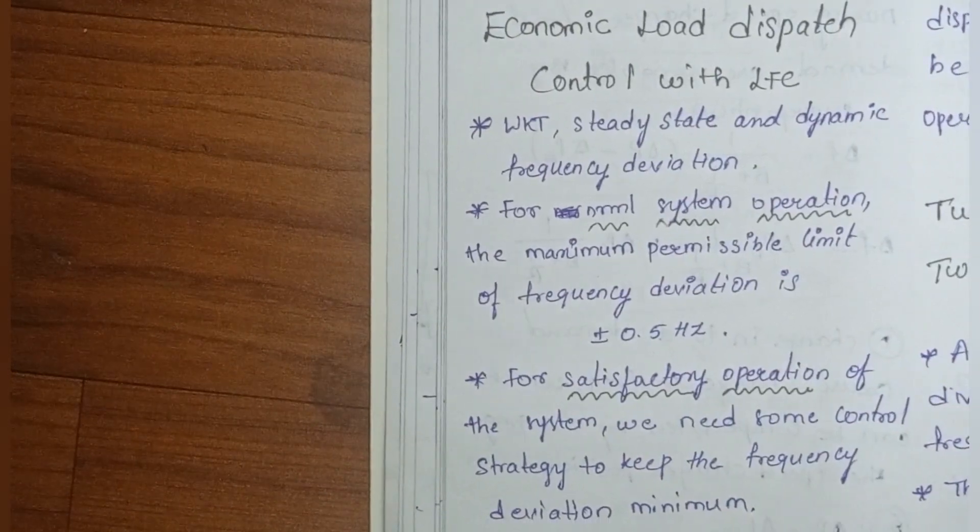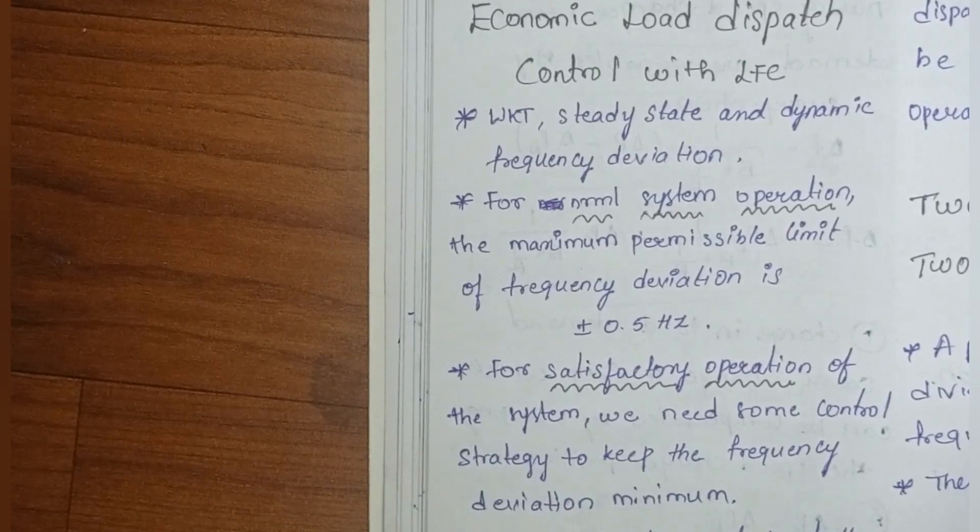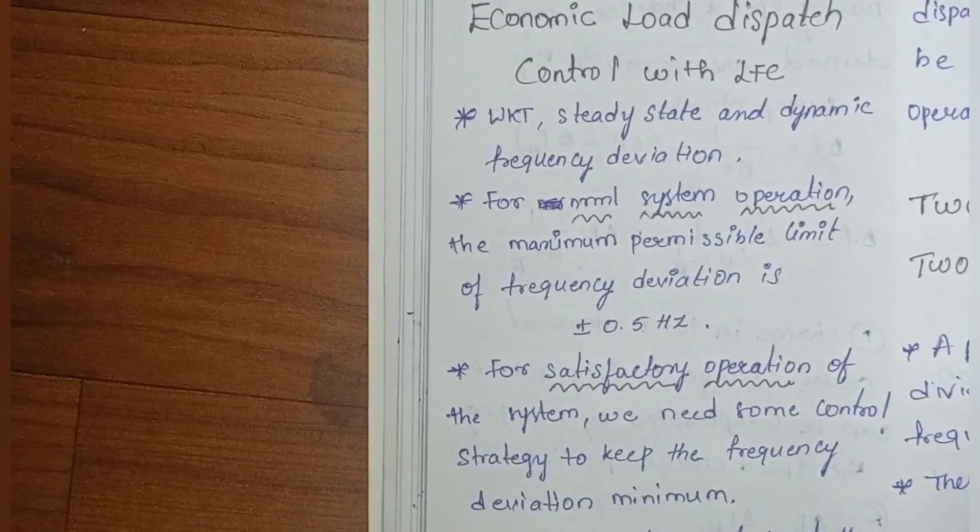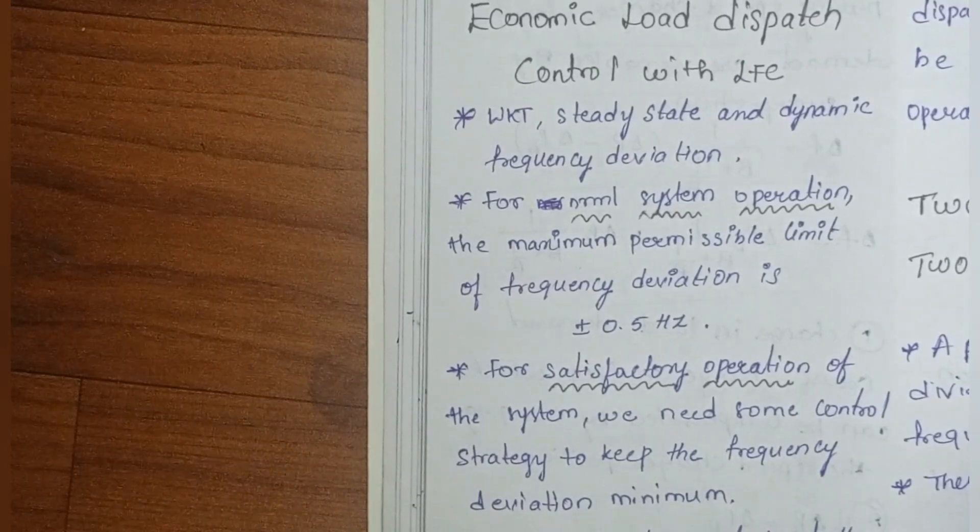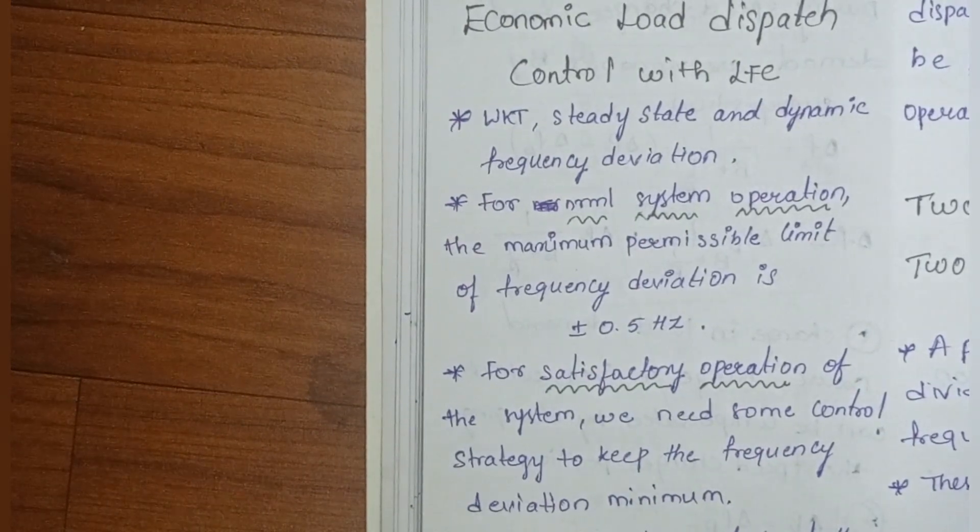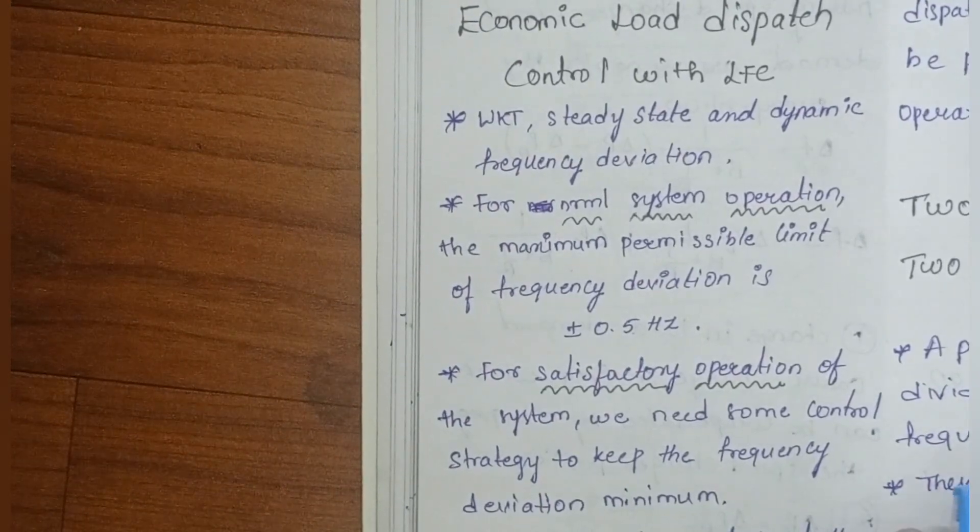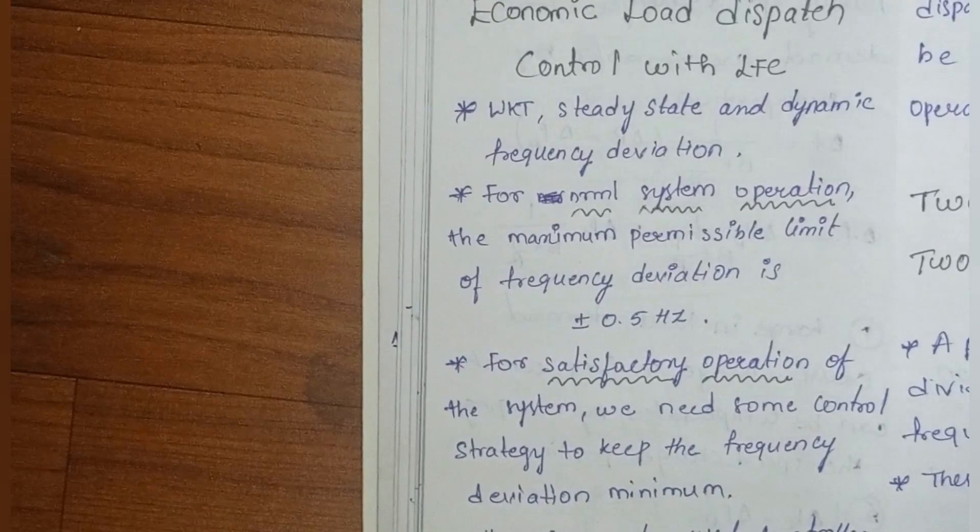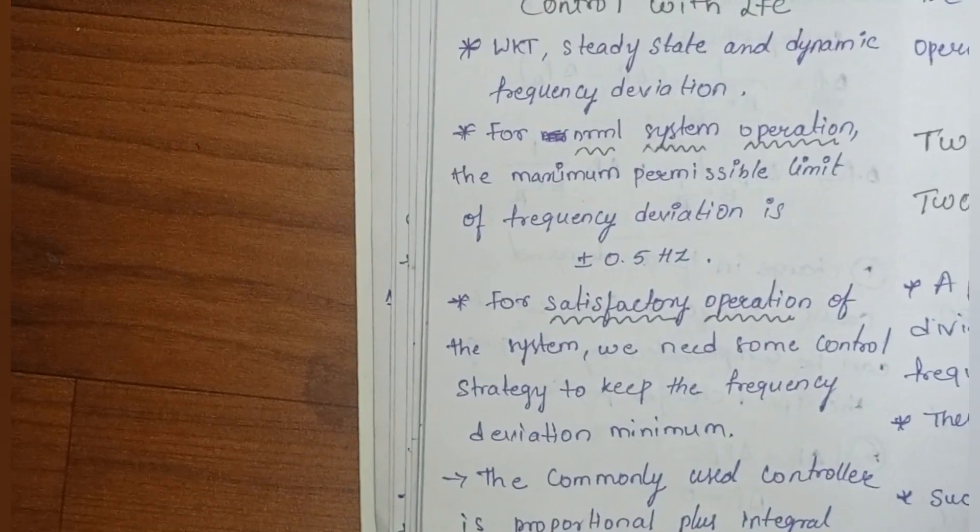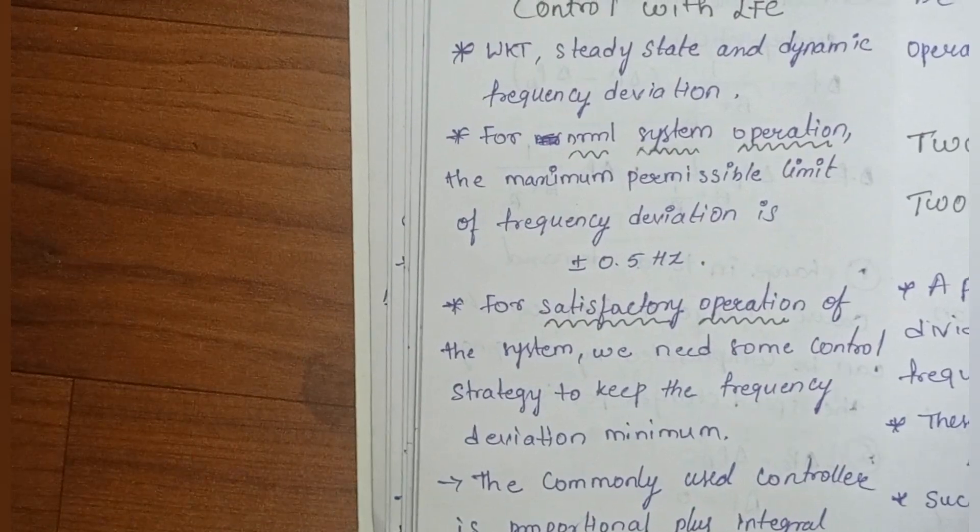We will look at LFC with steady state and dynamic operation. For normal system operation, the frequency deviation is ±0.5 Hz. This is the maximum permissible limit. The process of forecasting and the system is added to control strategies.